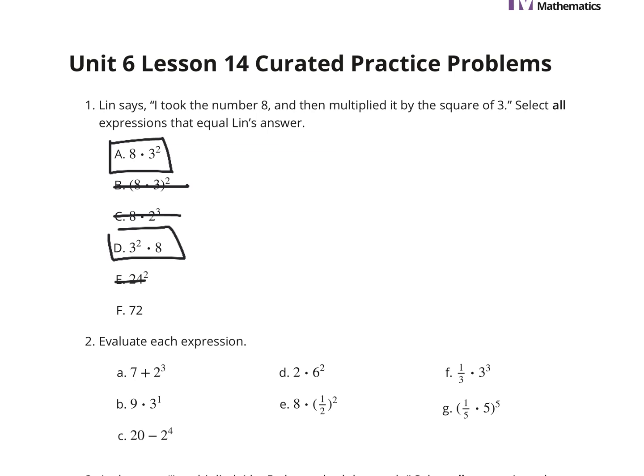And we look at 72 and go, I don't know. Well, think about 8 times the square of 3. That is 8 times 9, which is exactly 72. So you're looking at A, D, and F being all the expressions that equal Lynn's answer.